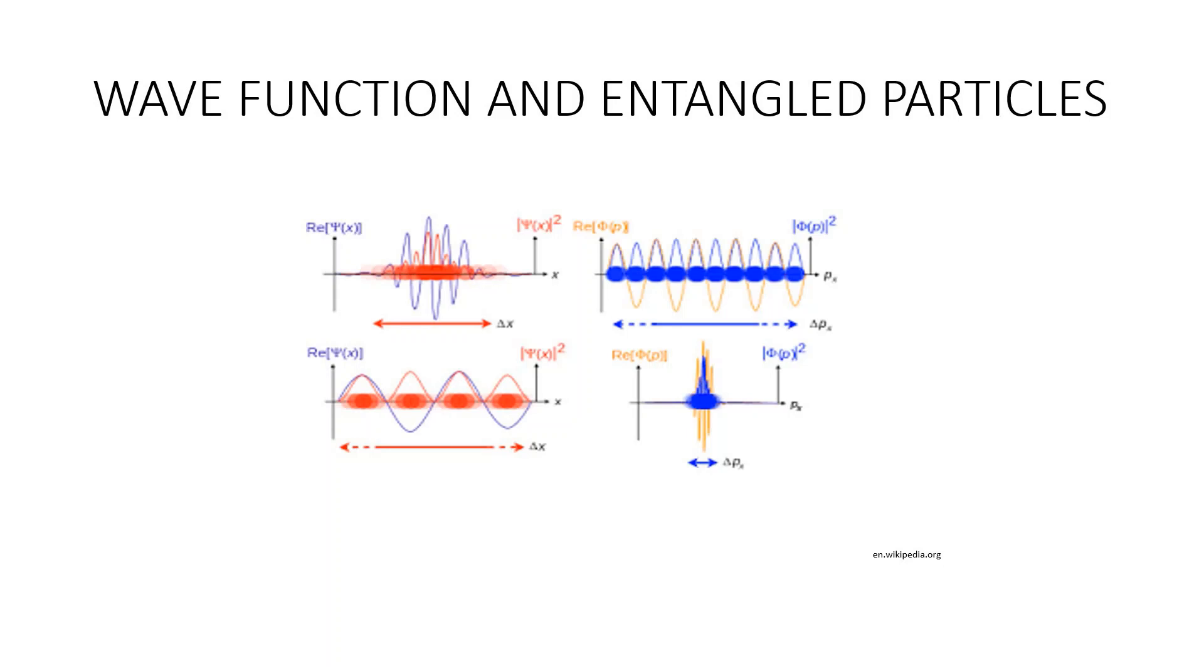First, let me talk about wave function. Wave function in quantum mechanics is a variable quantity that mathematically describes the wave characteristics of a particle. The value of the wave function of a particle at a given point of space and time is related to the likelihood of the particles being there at the time. It is possible to separate two subatomic particles and both are described by a single wave function. These two particles are entangled.